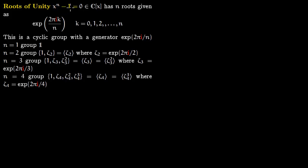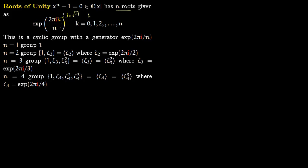Consider the polynomial x^n minus 1 equals 0 over the complex numbers. This polynomial has n roots, and these distinct n roots are given as e^(2πik/n), where i is the square root of minus 1, for k equals 0, 1, 2, 3, all the way to n-1. For k equals 0, you always get 1 as a root. These roots form a cyclic group.